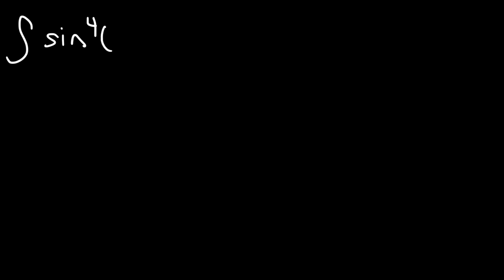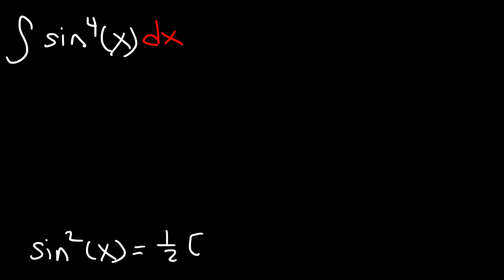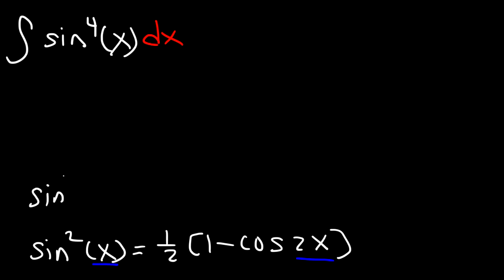What is the integral of sine raised to the fourth power of x? For this problem you need to be familiar with the power reducing formulas for sine. Sine squared is one half times 1 minus cosine 2x — notice that the angle doubles from x to 2x. Now for sine to the fourth power, how can we convert it?